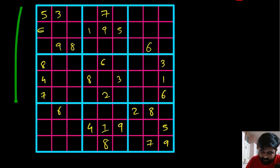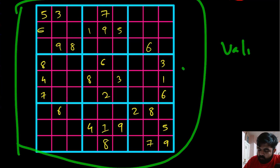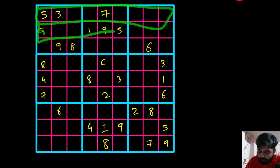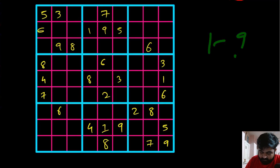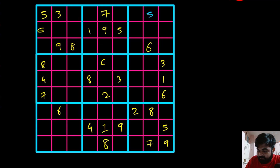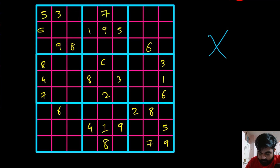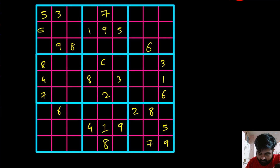Looking at this example of a valid sudoku board, what makes it valid is that amongst all nine rows the filled elements are filled in a manner that there is no repetition between one to nine. For example, for this first row, if I add one more five, it would make the board completely invalid because the element five would be repeated two times. We are not concerned with empty cells since they can have any value.